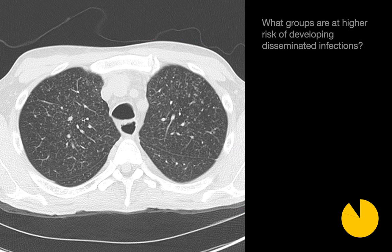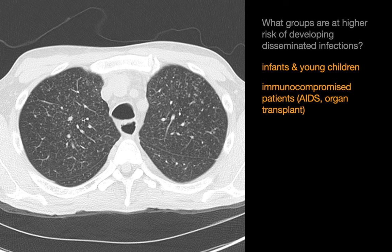What groups are at higher risk of developing hematogenously disseminated infections? When we see cases of miliary tuberculosis or other miliary infections, we tend to think of the young and immunocompromised adults.